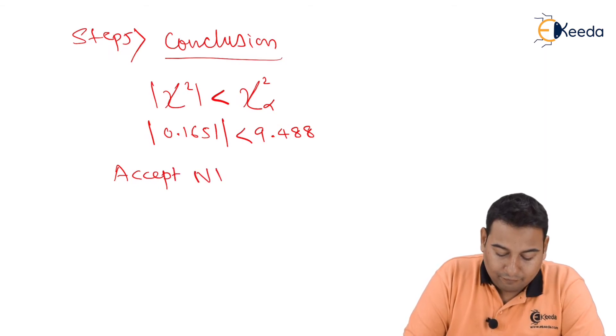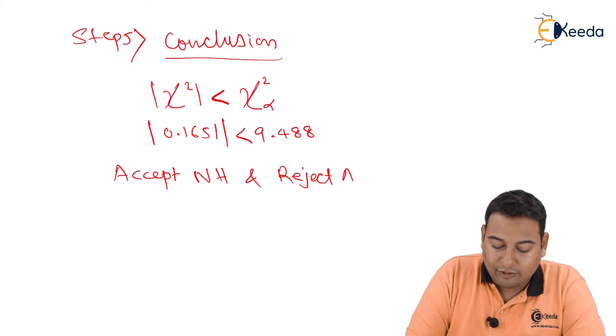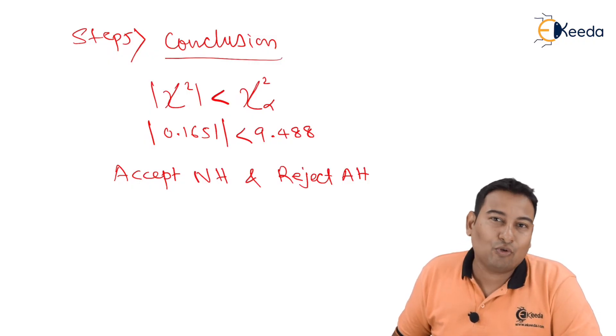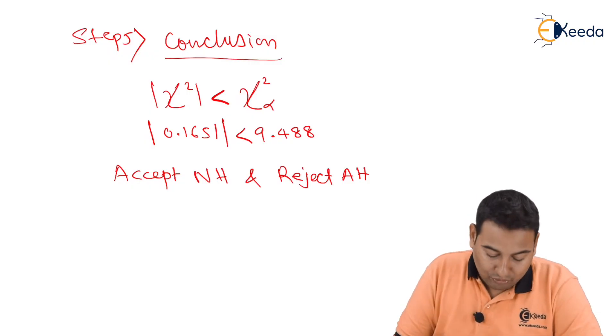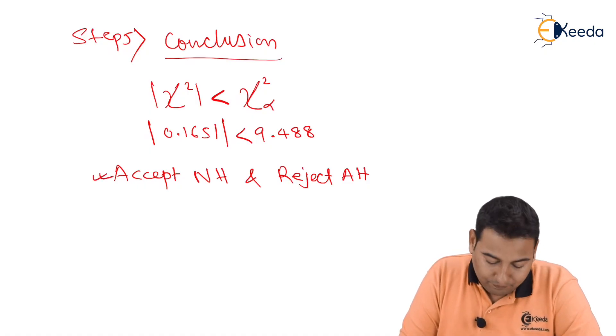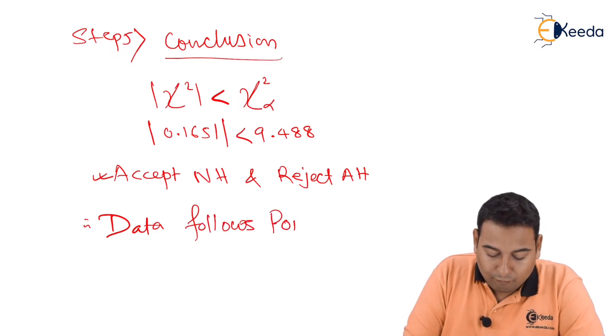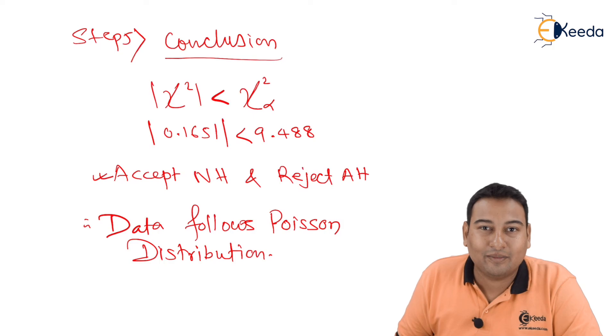So what is the conclusion? Accept null hypothesis and reject alternative hypothesis. That means we're accepting the null hypothesis. And what was my null hypothesis? Data follows Poisson distribution was my null hypothesis, so I'm accepting it. Therefore, data follows Poisson distribution is the final conclusion. Hope you're clear with it. Thank you.